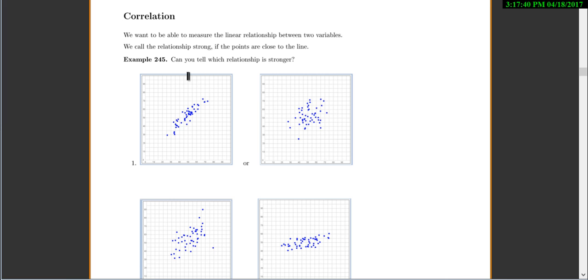The next thing to know is correlation. So we want to be able to measure the linear relationship between two variables. And we call the relationship strong if the points are close to the line. So on these, let's just kind of see if we can eyeball it of where things seem stronger. Okay, so looking at these two, I would think this one, those points all kind of seem to be closer to a line if I was to draw a line in. Whereas these ones, the points are a little bit further apart. So I would say the first one is stronger.